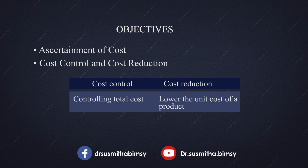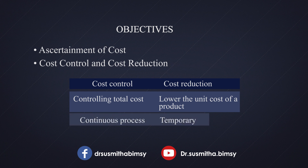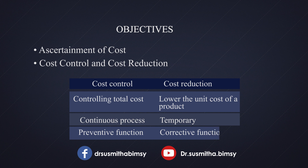Here are some important differences between cost control and cost reduction. Cost control focuses on controlling the total cost and does not guarantee quality maintenance of the product. Cost reduction, on the other hand, aims to lower the unit cost of a product and ensures 100% quality maintenance. Cost control is a continuous process, while cost reduction is a temporary process. Cost control is a preventive function because it ascertains cost before its occurrence, whereas cost reduction is a corrective function.